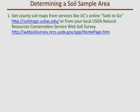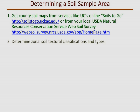So how do I go about collecting representative samples? You need to determine appropriate sampling zones. County soil maps are used to help define regional variations in soil textural classifications. You can also find these maps on the web at the UC's Soil2Go website out of Kearney or the USDA Natural Resources Conservation Service Web Soil Survey.